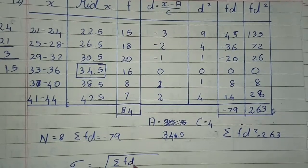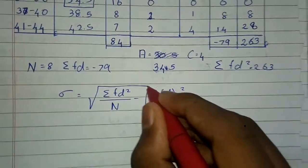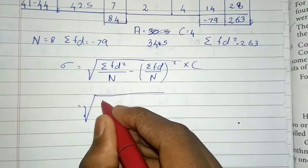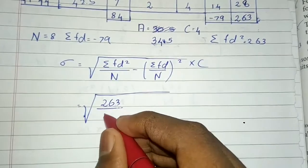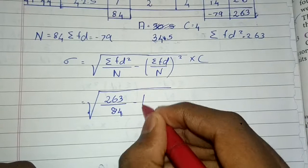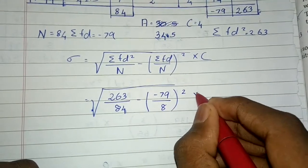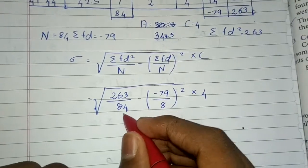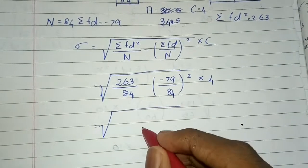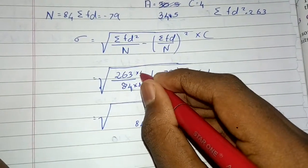Root to the power: the formula is f·t² divided by n, minus summation of f·t divided by n, quantity squared, into C. Now the f·t² value is 263 and n value is 84. 84 minus summation of f·d minus 79, squared, C equals 4. 84 — square — this is the answer.